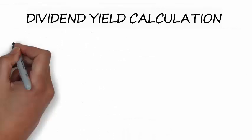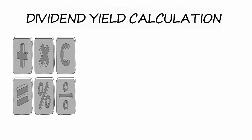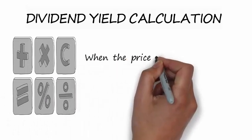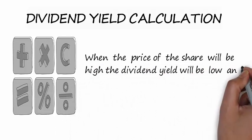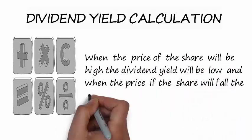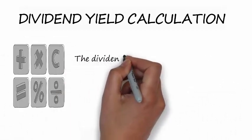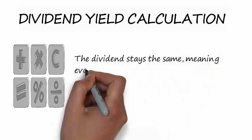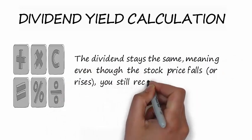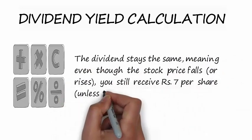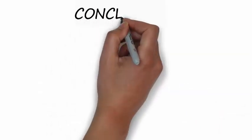Please note that there is an inverse relationship between stock price and dividend yield. When the price of the share is high, the dividend yield will be low, and when the price of the share falls, the yield will be higher. Also note that the dividend stays the same — even though the stock price falls or rises, you still receive rupees 7 per share unless the company changes the dividend.